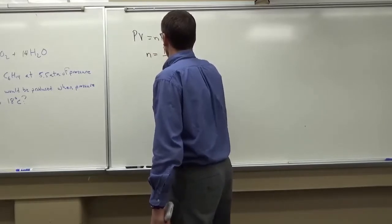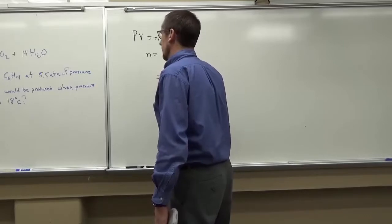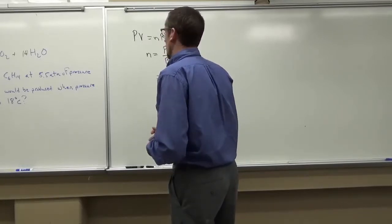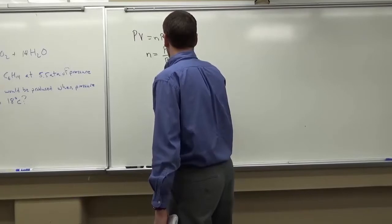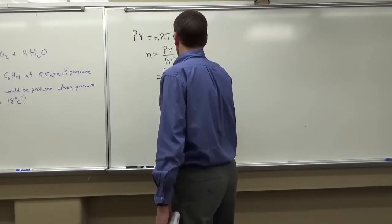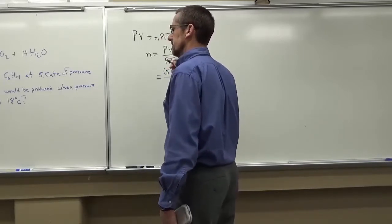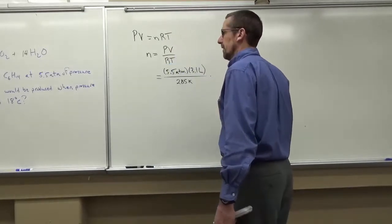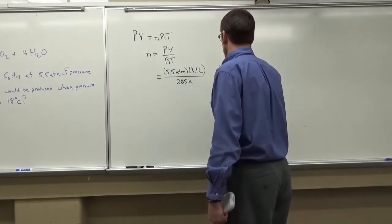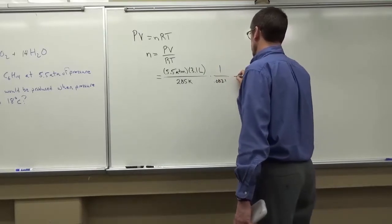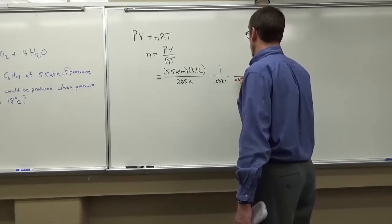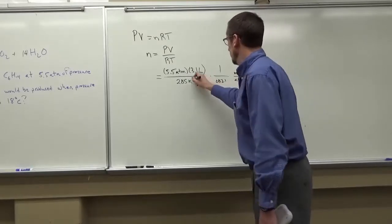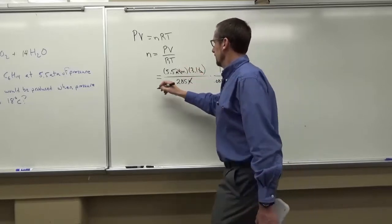So I know pressure is 5.5 atmospheres. Volume is 3.1 liters. That's going to be divided by the temperature. So 12 degrees, 273, 283, 285 Kelvin. I'm going to multiply by my constant which is going to be on the bottom. So 1 over 0.0821. And then I need to flip the units over. So the units are going to be atmosphere, liters on the bottom, and moles of Kelvin on the top. So I can do some cancellation here. This is going to give me number of moles.